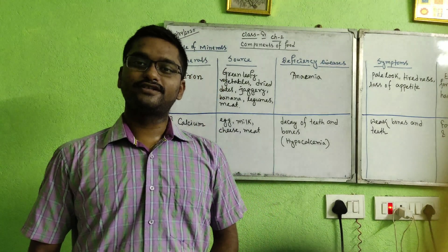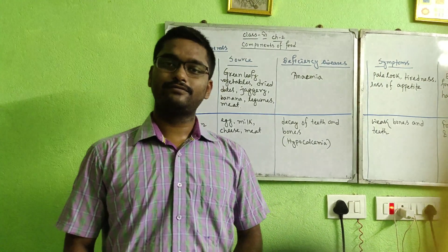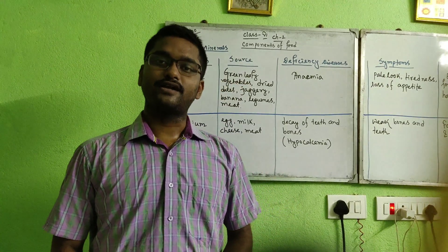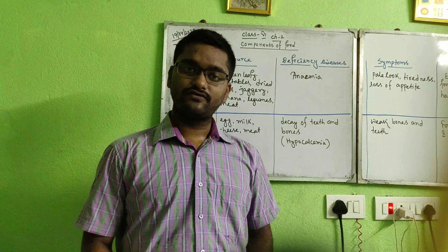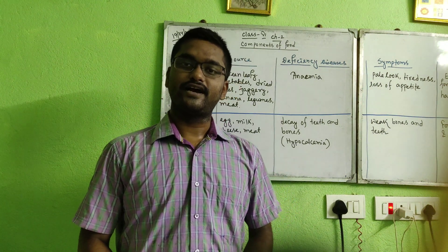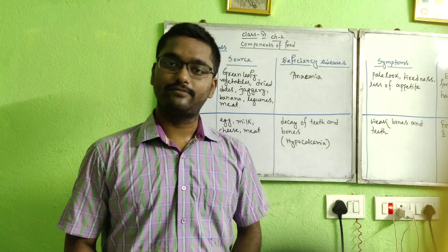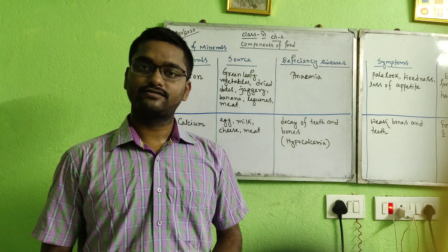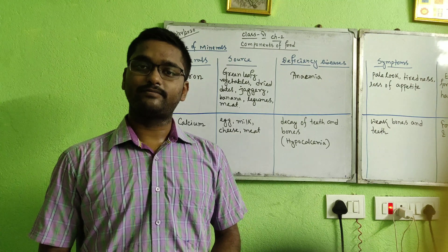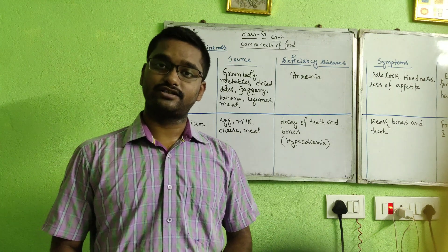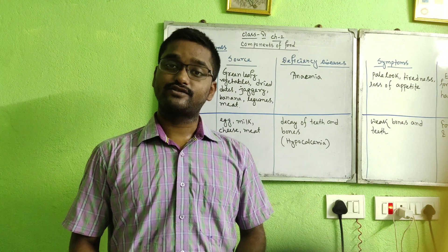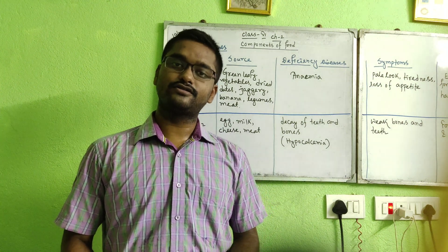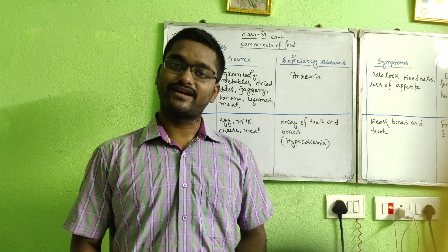Hello, good evening students. My name is Shoikot Metro. We have already started our second chapter, components of food. On the very first day I discussed about the table of vitamins — five columns covering name of the vitamins, their functions, deficiency diseases, and sources. Today you will learn about the table of minerals.